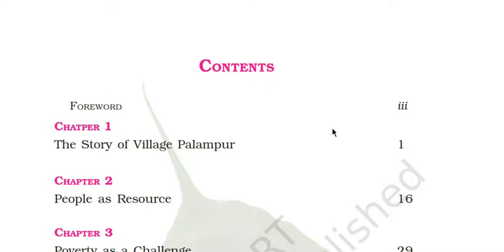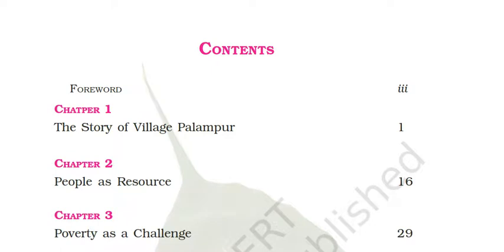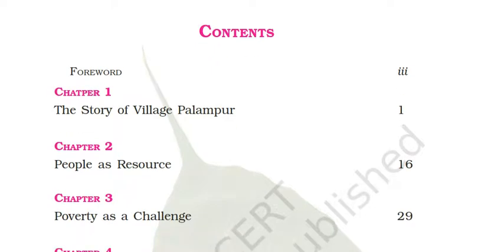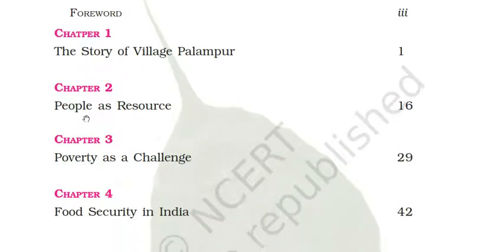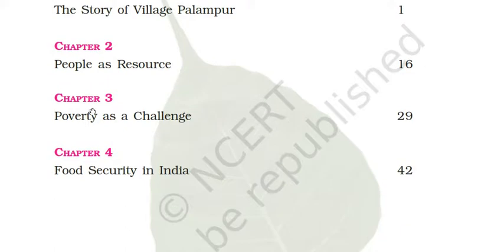Hello and welcome to Sarushi Classes. In this lecture we are going to read chapter number one of NCERT's Economics Class 9. The content includes: first chapter - the story of village Palampur, second chapter - people as resources, third chapter - poverty as a challenge, and fourth - food security in India.